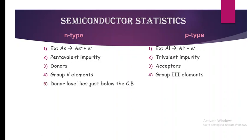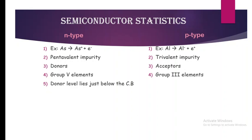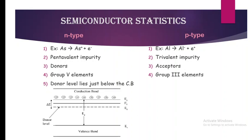The main thing to study in semiconductor statistics is the donor level as well as the acceptor level. We have already seen that the donor level lies just below the conduction band in the case of n-type semiconductor.